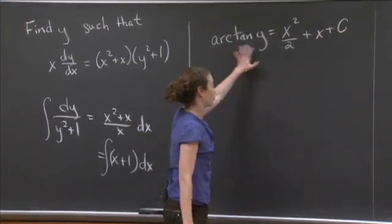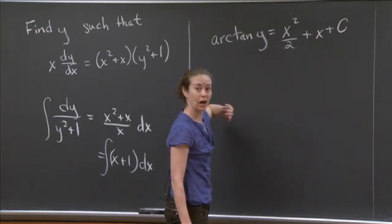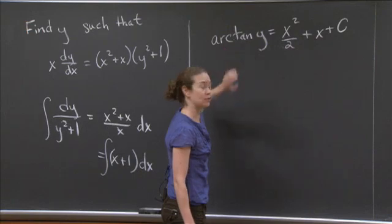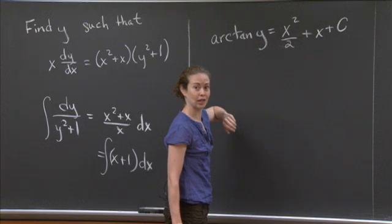So far I'm doing everything OK. Now I need to figure out how to isolate y. Well, arctan y is the inverse of the tangent function, so if I want to isolate y, I have to take the tangent of both sides.